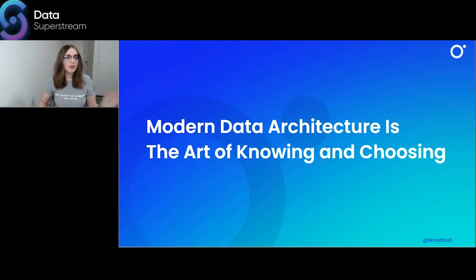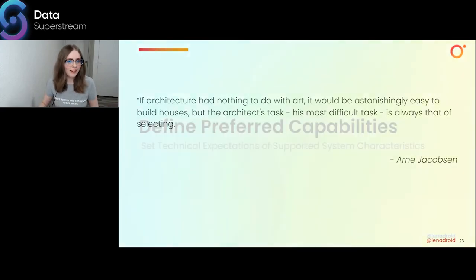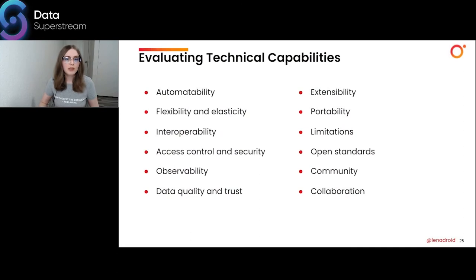The point is finding ways to evaluate and choose concepts that align to your goals. Modern data architecture is really the art of knowing and choosing. We never feel certain until we have confronted our initial solution with other solutions, even if the first proves to be the right one. Step three: out of understanding your goals and being familiar with the paradigms, we can define a set of preferred capabilities and characteristics we expect to design our system with. Think about what level and type of automation capabilities you would need — a simple API or advanced infrastructure-as-code tools spanning multiple providers.